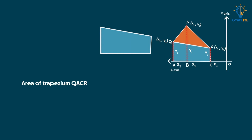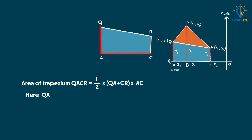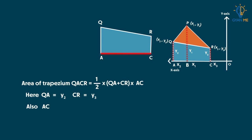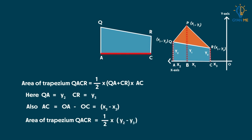Similarly, let's find the area of trapezium QACR, which equals ½ × (QA + CR) × AC. Here QA = y₂ and CR = y₃, and AC = x₃ − x₂. On substituting the values, we get area of trapezium QACR = ½ × (y₂ + y₃) × (x₃ − x₂).